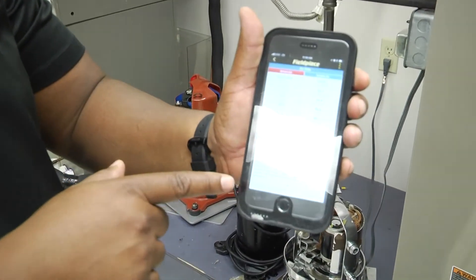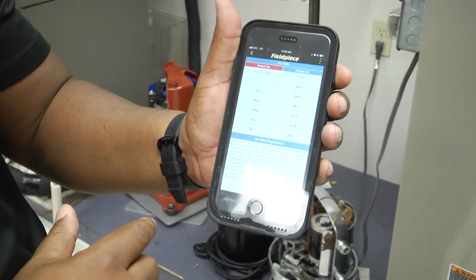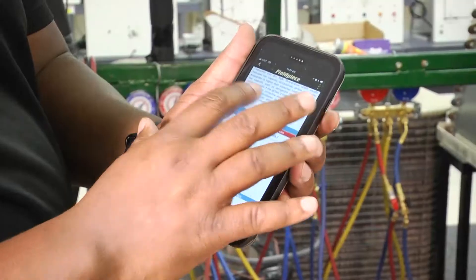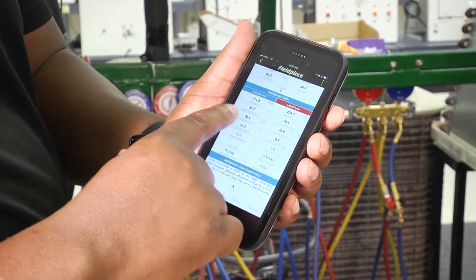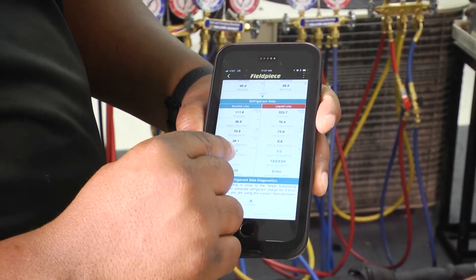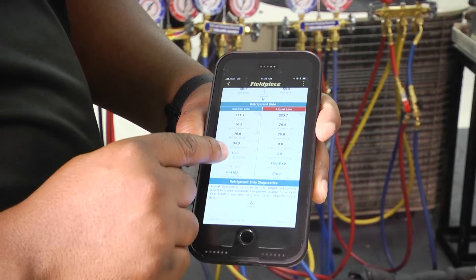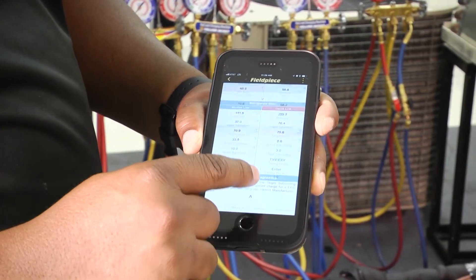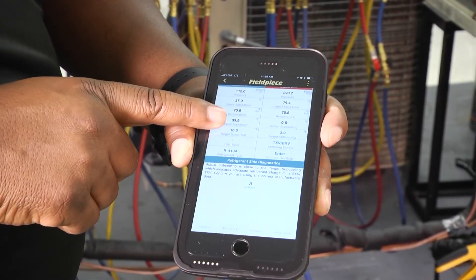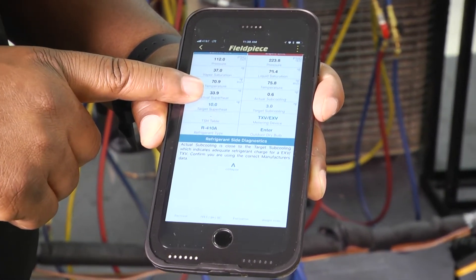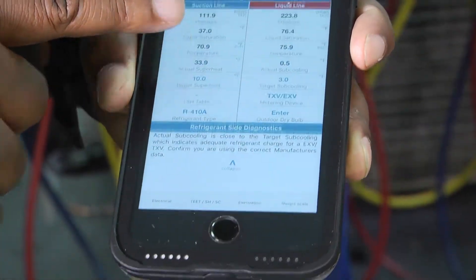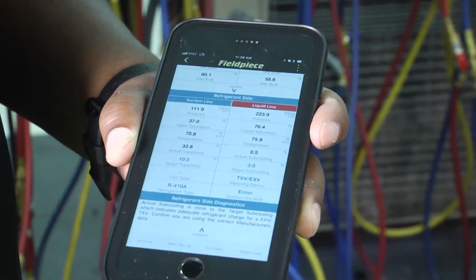So now as you can see in our air diagnostics, we're not getting an error at all, but it's given us diagnostics. But before we look at that, I want to go ahead and look at the rest of our refrigerant and air side. Once we collapse all of that, we can look at all of our numbers and see what those are. We can get our pressures from our suction side and our liquid side and calculate our superheat and our subcooling, so on and so forth. And then we can come down and open this up to get an actual refrigerant diagnostics. And it says actual subcooling is close to the target subcooling, which indicates adequate refrigerant charge for the EXV or TXV. Confirm you are using the correct manufacturer's data. So based on that information, we can make some decisions about our refrigerant charge.